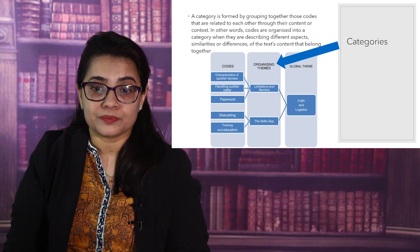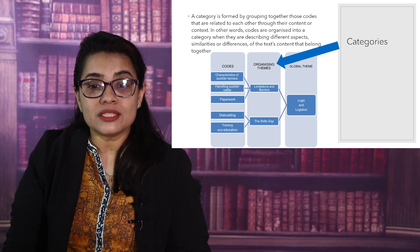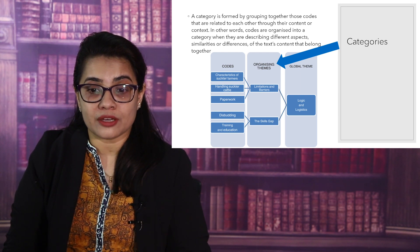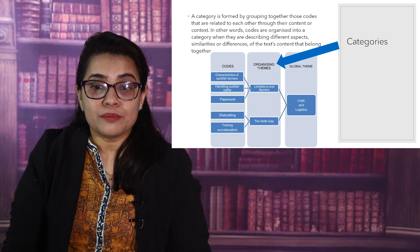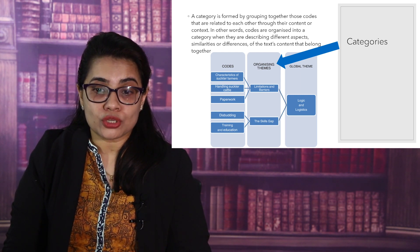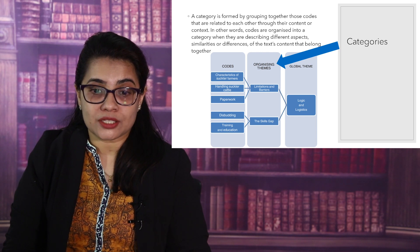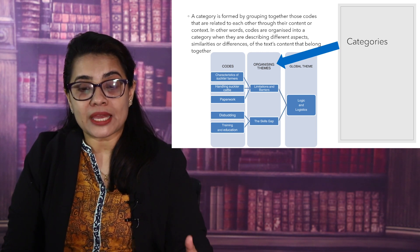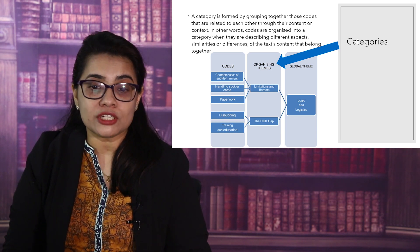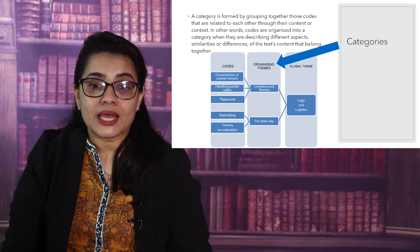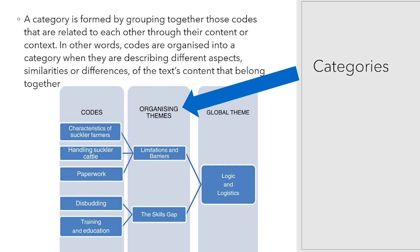Codes are organized into a category when they are describing different aspects, similarities, or differences of the text content that belong together. In the figure shown, the first column has many codes and in the second column you can group similar codes together by generating one category.